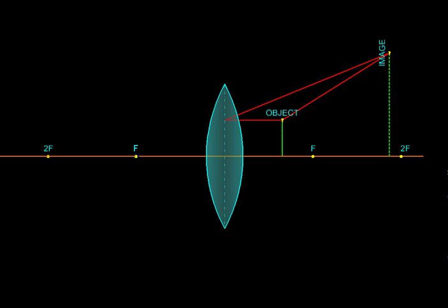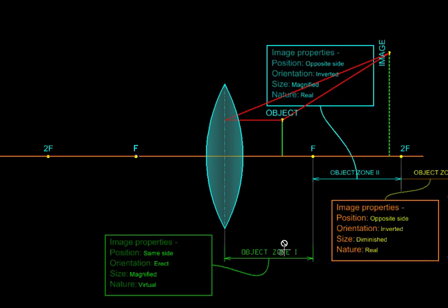So let us mark these zones here, the three zones: one between the center to the focus, from focus to twice the focal distance, and then beyond. In the first zone, the image is on the same side. It is erect, it is magnified, and it's virtual. We are using it as a magnifying glass.